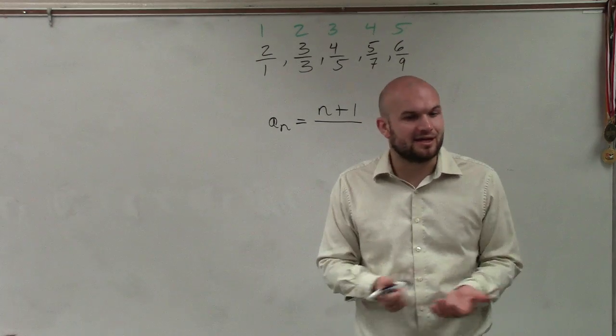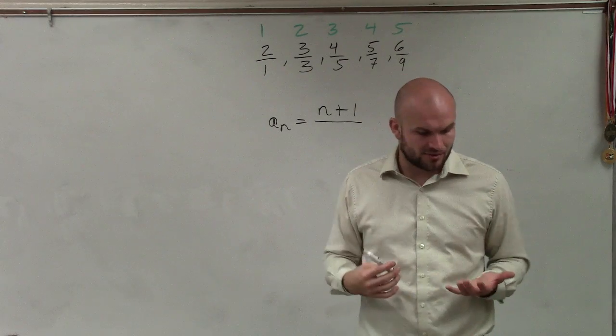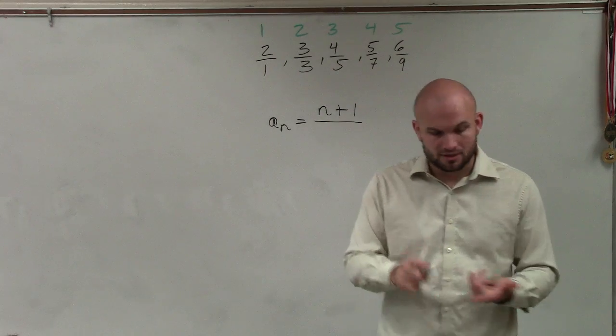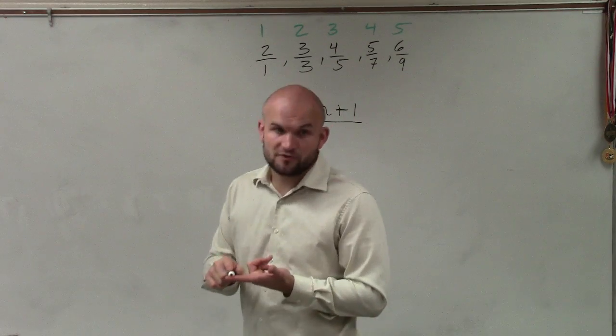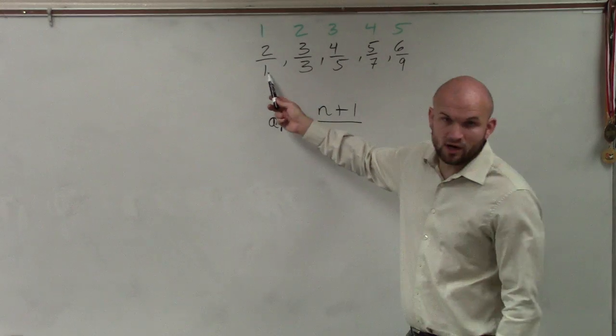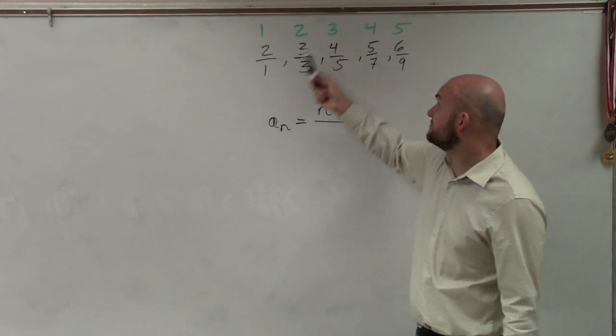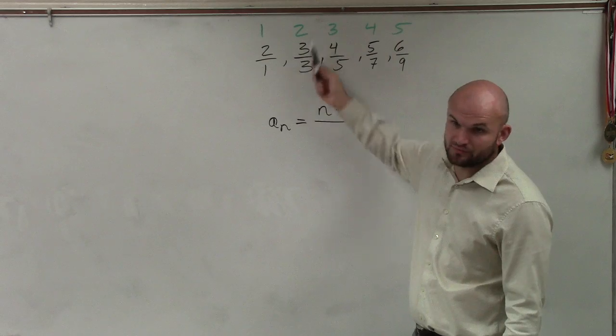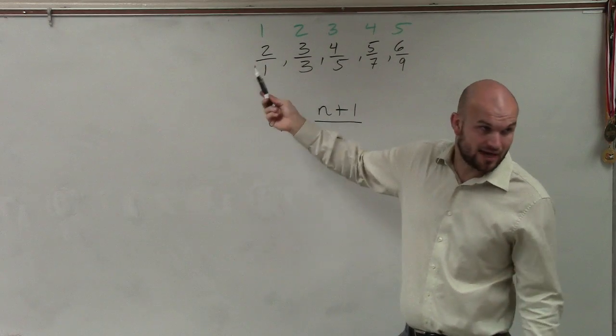So the next thing is when I'm trying to figure these out, there's only so many possibilities that we're going to go over in this class. You look for addition and subtraction first. To go from one to one, I have to add zero. Well, obviously, adding zero to go from two to three is not going to work. So adding and subtracting is out.